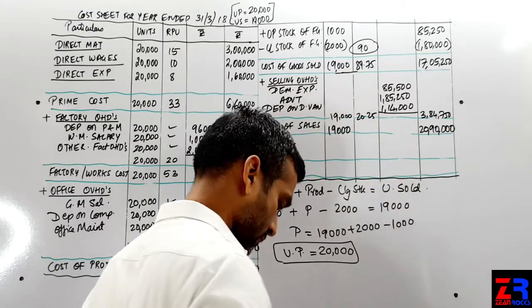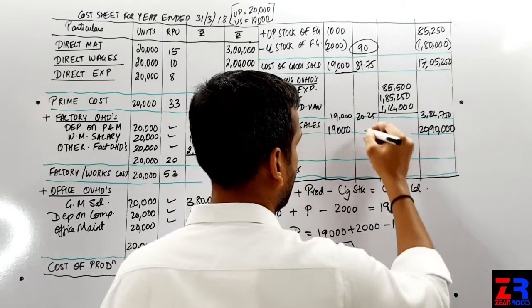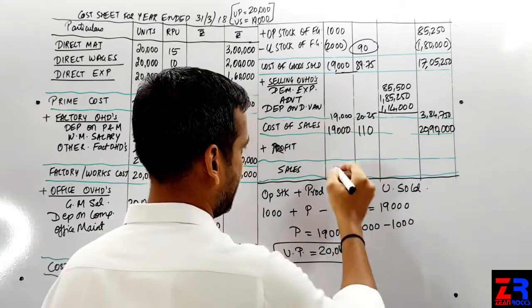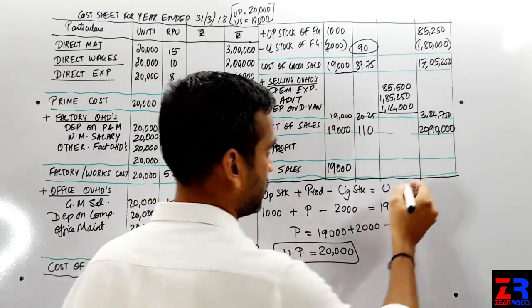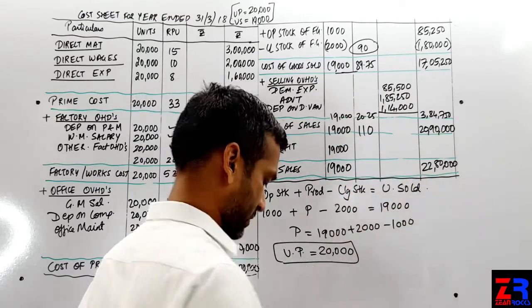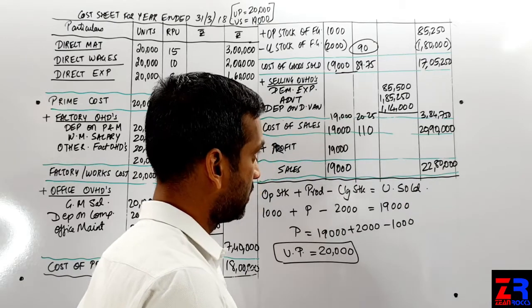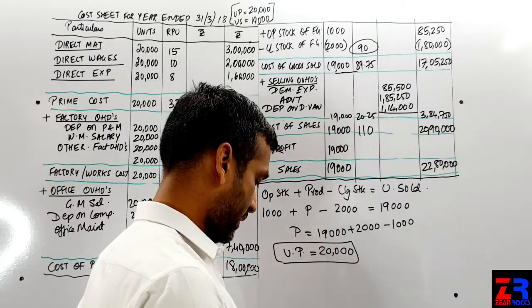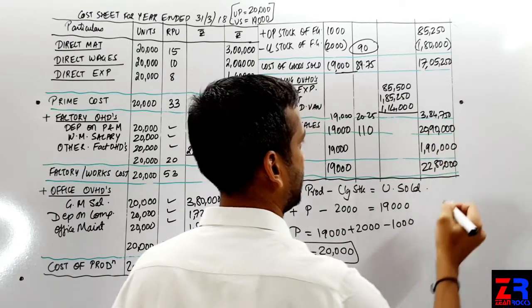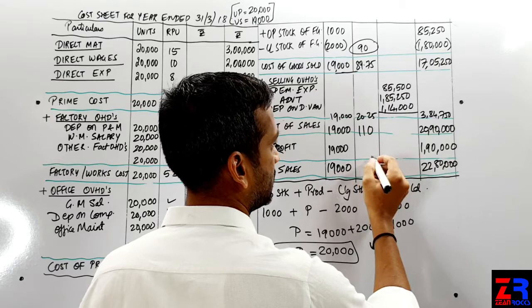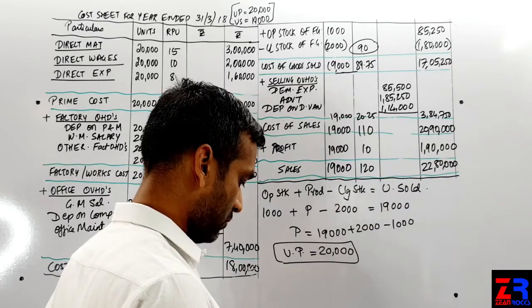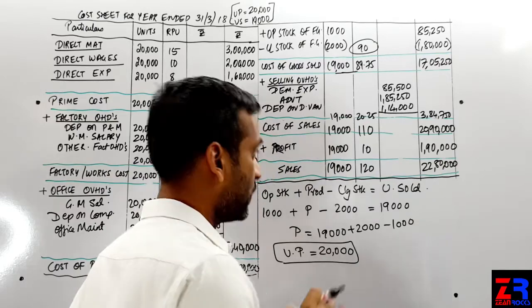At profit you will get sales. Sales question mein diye hai 19,000 units into 120 equals 22,80,000. So profit nikalna hai? Yes, profit will be 22,80,000 minus 20,90,000, that will be 1 lakh 90,000 divided by 19,000, you will get 10 per unit and total 1,90,000. Check it back: 19,000 into 120 equals 22 lakh 80,000. Perfect.